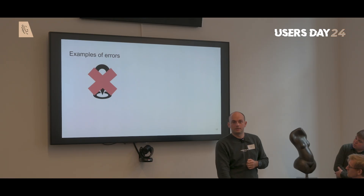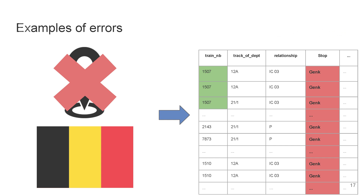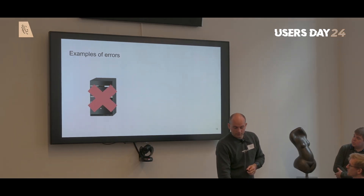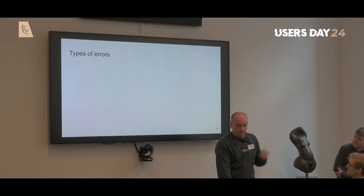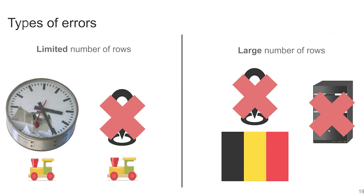It can also happen that the GPS sensor goes down for the entirety of Belgium — however unlikely — causing all trains to think they're at the same station. Another scenario is that the server goes down and we only see four rows instead of the expected 70,000 rows. These are different types of errors: some affect a very limited number of rows, like 10–15 rows for a single train with an error, while others — like a server going down — affect tens of thousands of rows.